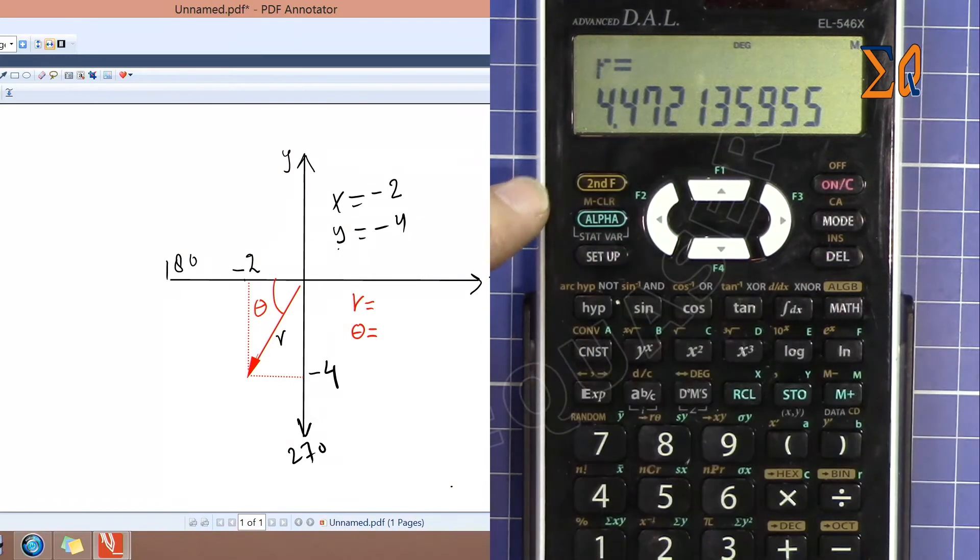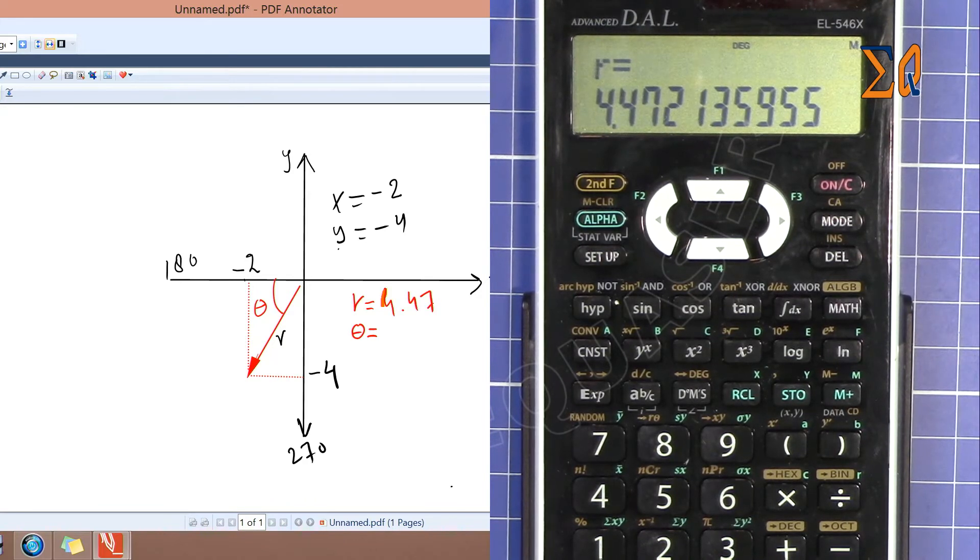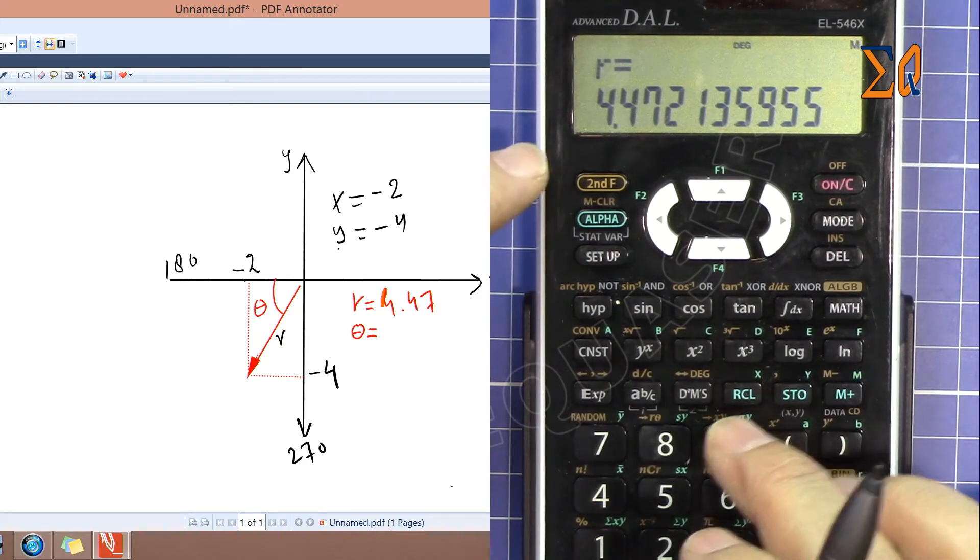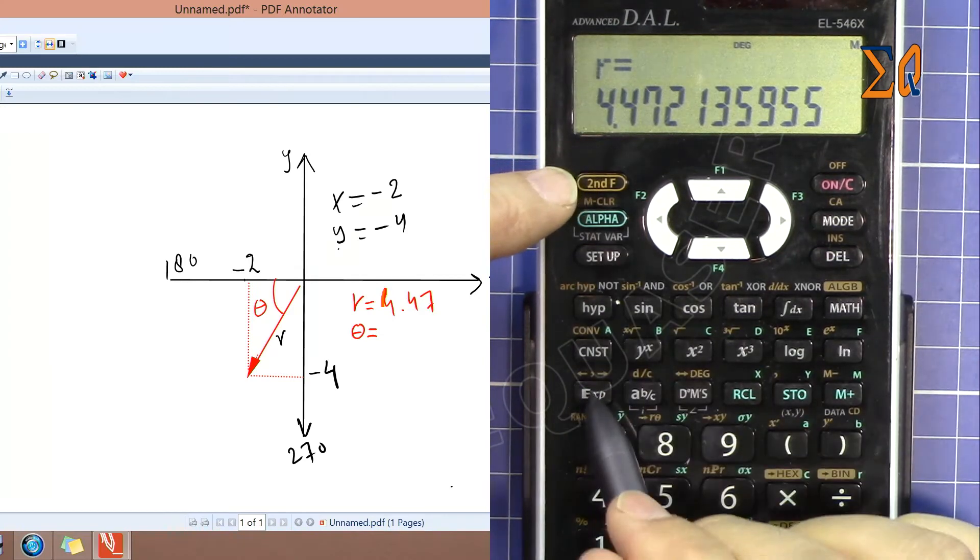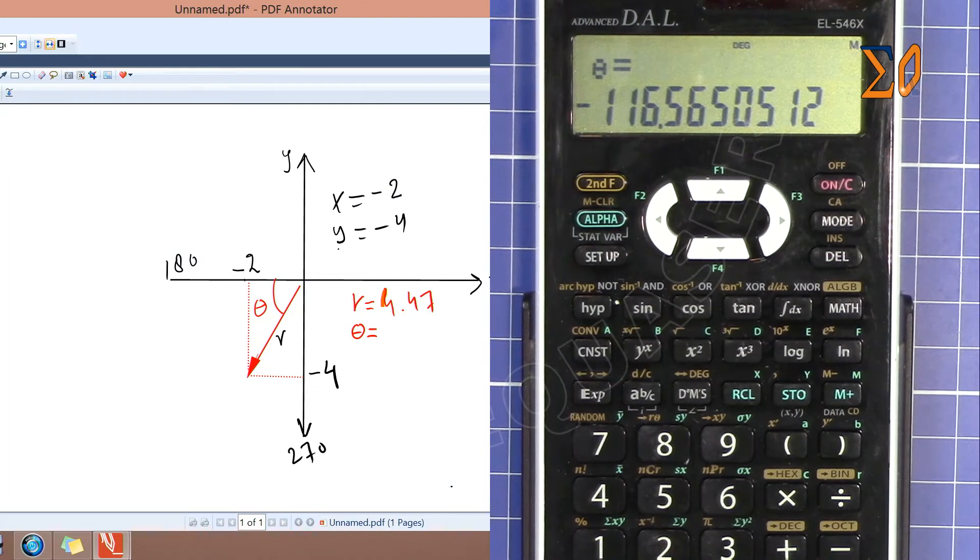Now second function and then 8. It says R is 4.47. For the theta, again we press second function and this EXP button. It says minus 116.5 degrees. This angle is correct from here to here because it's minus.